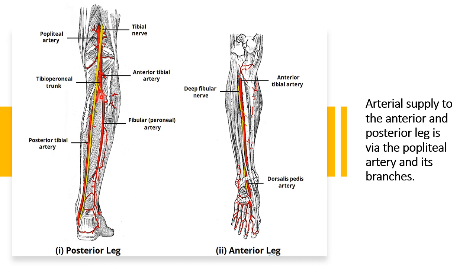At the lower border of the popliteus, the popliteal artery terminates by dividing into the anterior tibial artery and the tibial peroneal trunk. The tibial peroneal trunk then bifurcates into the posterior tibial and fibular arteries. The posterior tibial artery continues inferiorly along the surface of the deep posterior leg muscles.